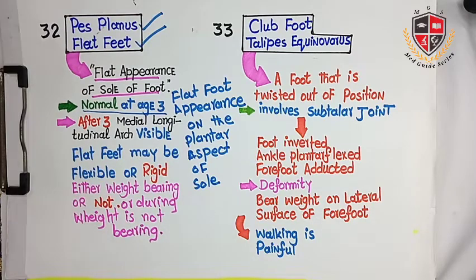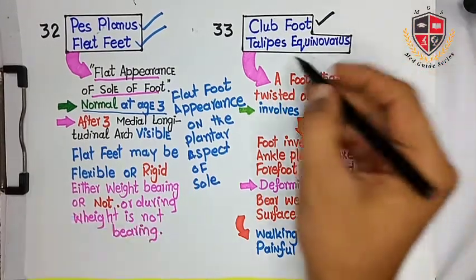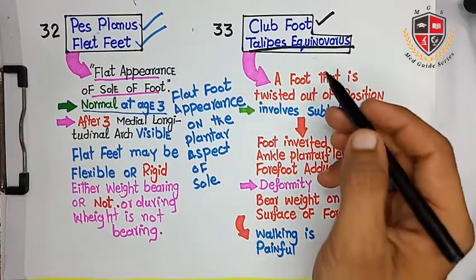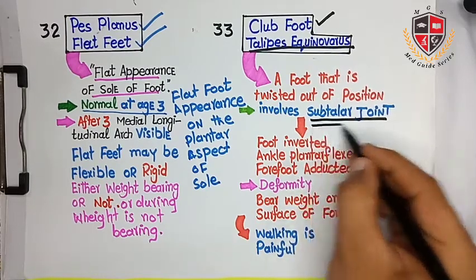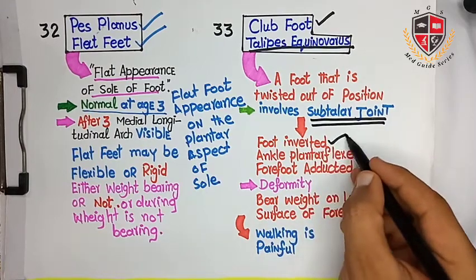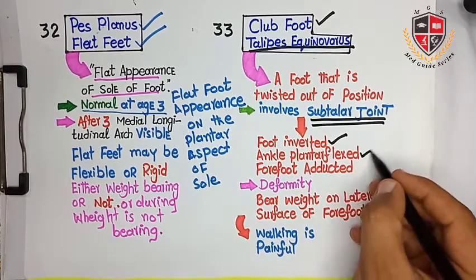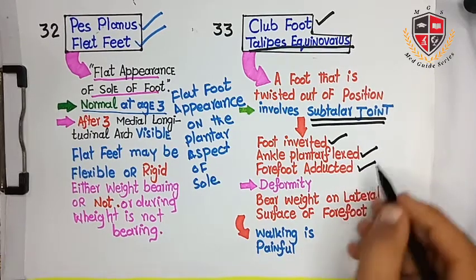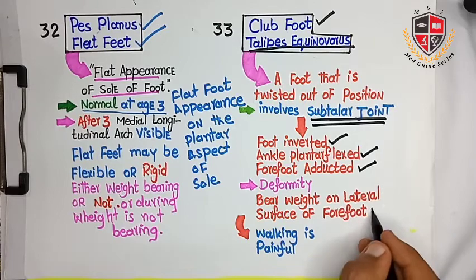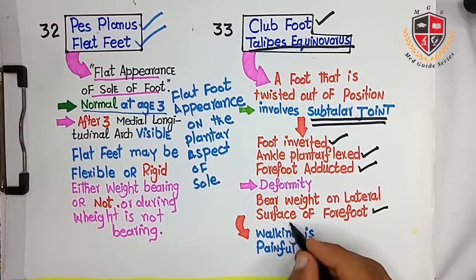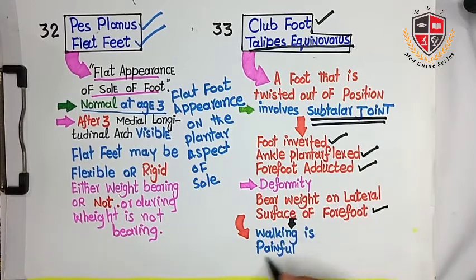Pes planus, or flat feet. The next clinical is club foot or talipes equinovarus. In this condition, the foot is twisted out of position; it involves the subtalar joint. The foot is inverted, the ankle is plantar flexed, and the forefoot is adducted. The person bears weight on the lateral surface of the forefoot, causing pain during walking.